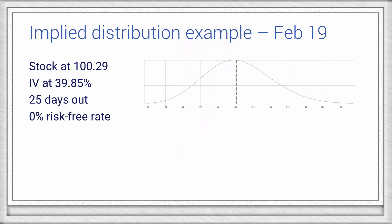To keep this scenario simple, we'll assume that the underlying does not issue a dividend and that the risk-free rate is 0%. In practice, we do factor those parameters in, but we'll keep them out here. Using this setup, we can map out the implied distribution for February 19th.